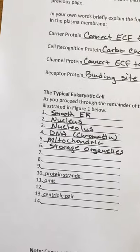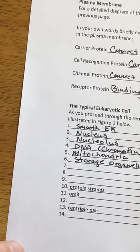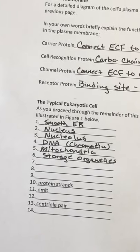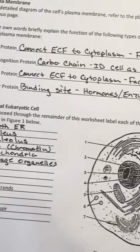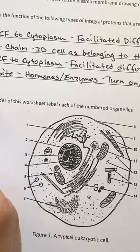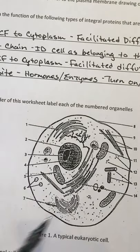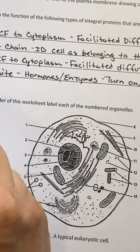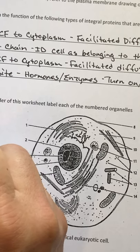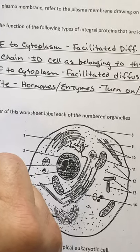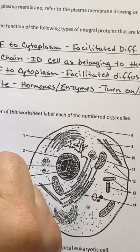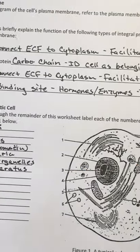The storage organelles are basically a single membrane that stores variable substances for the cell. You really can't identify them unless you know what's actually inside of the organelle. Number seven is the Golgi apparatus — named for our old buddy Antoine Golgi, so the first letter is always capitalized.